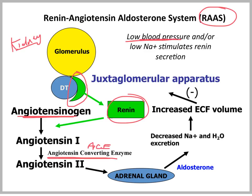We'll talk about ACE inhibitors in regards to managing blood pressure. Angiotensin converting enzyme then converts angiotensin 1 to angiotensin 2, one of the most potent vasoconstrictors in the body. You can see what's happening here — we're trying to improve blood pressure. But secondarily, it also has a positive effect on the production of aldosterone from the adrenal gland.